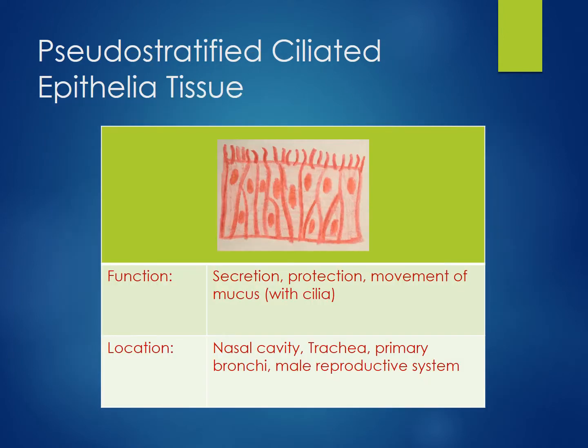Pseudostratified ciliated columnar epithelial tissue is made of tightly packed cells, which make it appear to have multiple layers. However, it is actually only comprised of a single sheet of cells. The tight packing aids in protection. Pseudostratified ciliated columnar epithelium plays an important role in lining the nasal cavity and trachea. Air that enters the nose needs to be warmed, moistened, and filtered before it gets to the lungs.